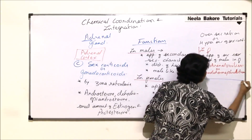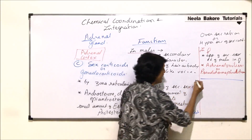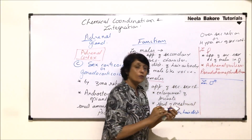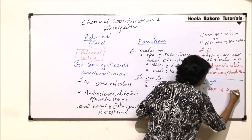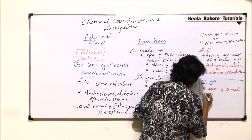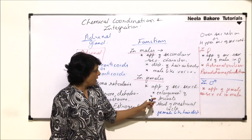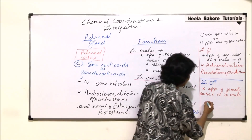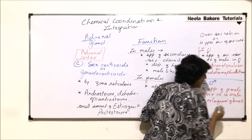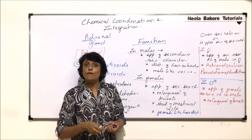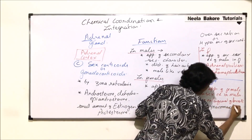In the case of over-secretion or hyper-secretion of sex corticoids in males, there would be appearance of female-like secondary sex characters. In males, this would include enlargement of breasts, and this condition is known as gynecomastia.